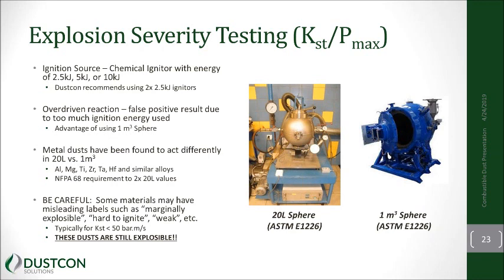Another important topic for 20-liter versus one cubic meter is metal dust. Those handling metal dust will understand that it acts differently from organic dust. We're finding that something about the volume of the one cubic meter sphere causes increased KST and Pmax values compared to the 20-liter results. As a result, NFPA 68 has specifically required that metal dust be tested in a one cubic meter sphere, or that you double the values found in the 20-liter sphere, for specific metals: aluminum, magnesium, titanium, zirconium, tantalum, and hafnium.